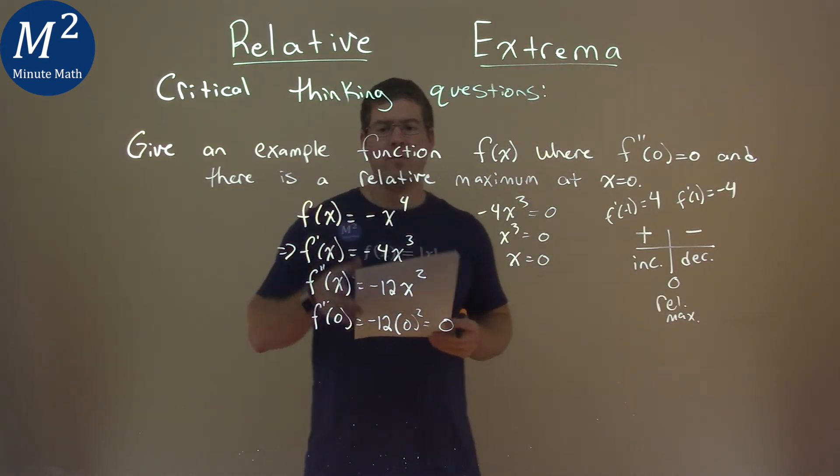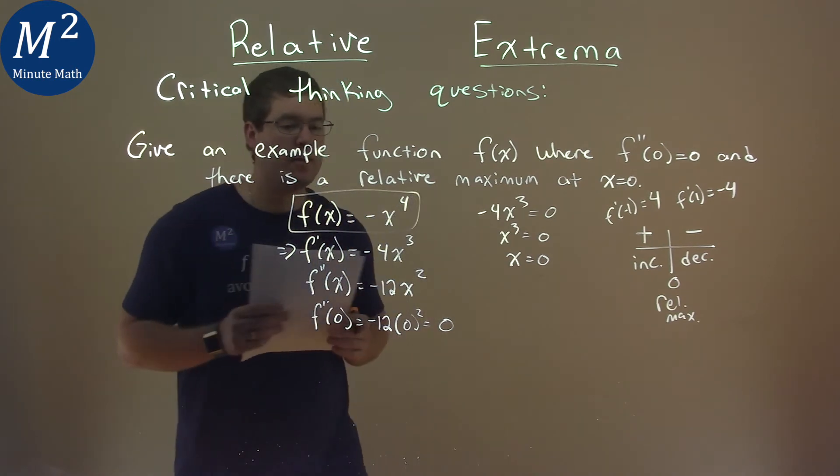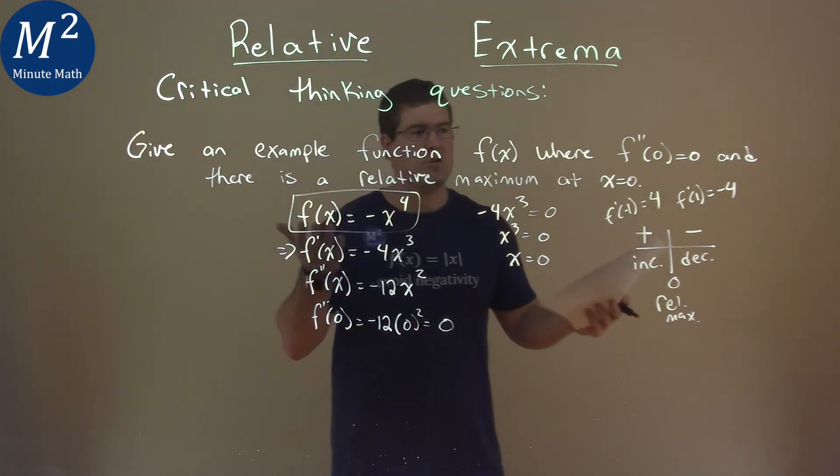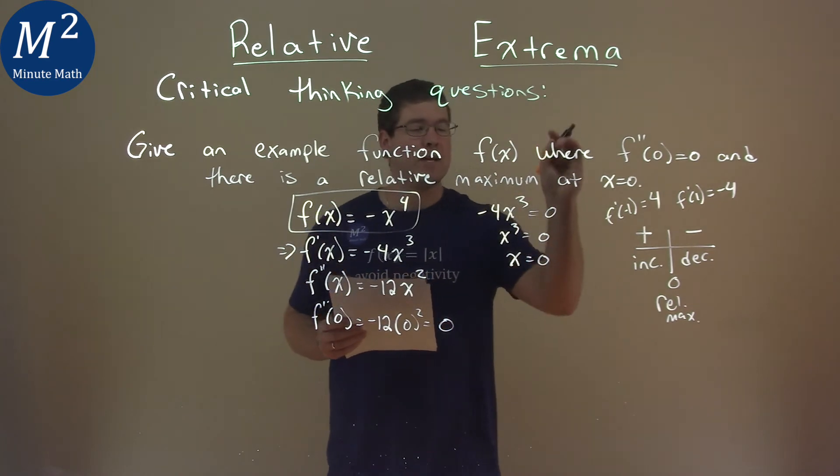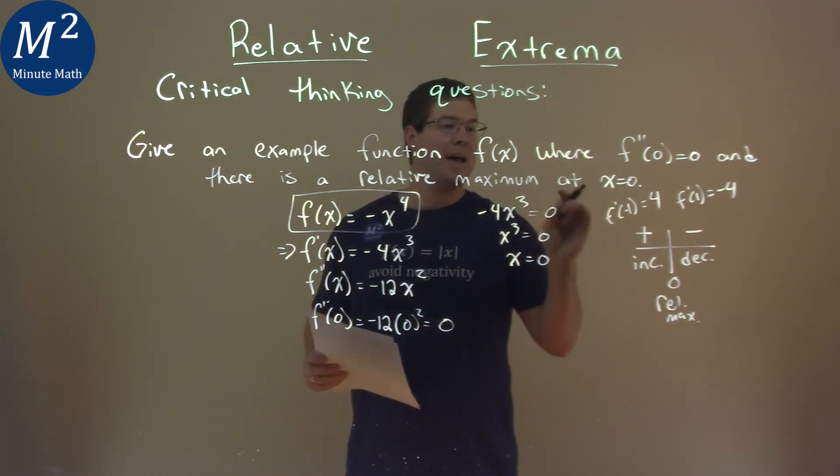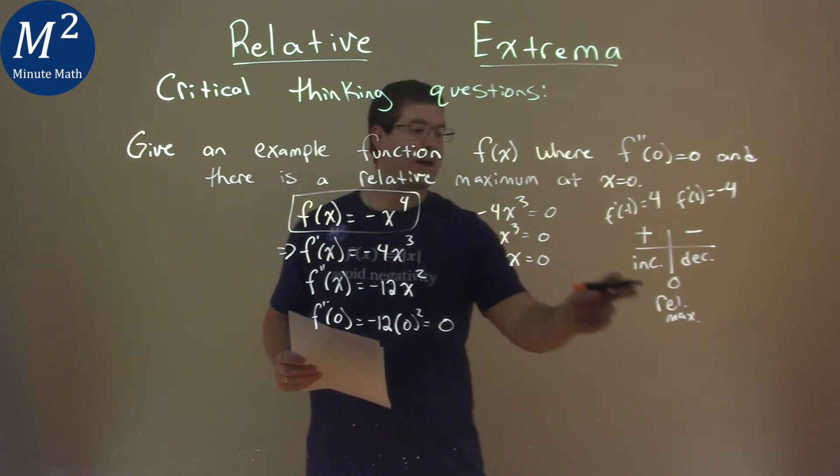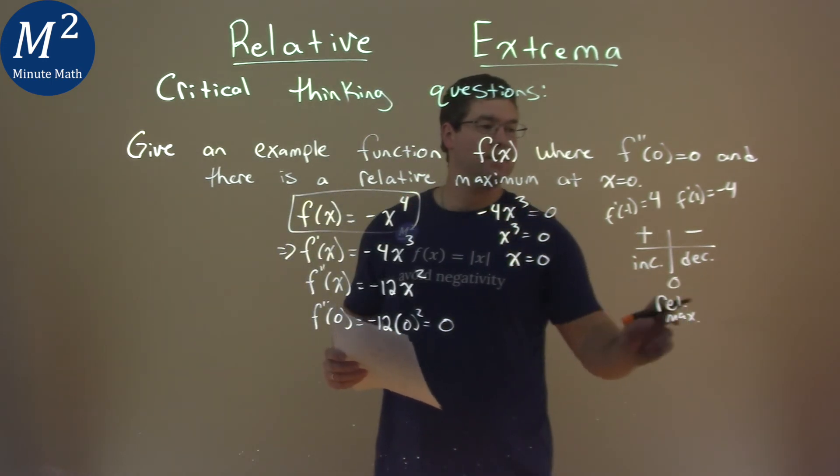And so, this function right here, f(x) = -x^4, we have shown satisfies everything. Its second derivative of zero is equal to zero, and we have a relative maximum at the x value, x = 0, right there.